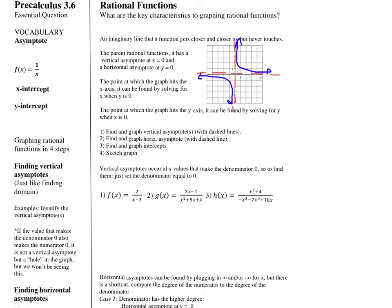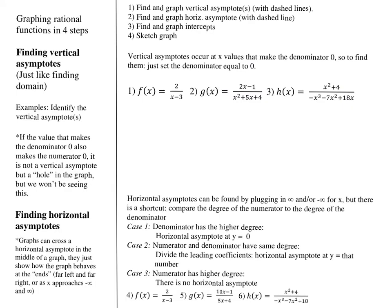Next up: graphing rational functions in four easy steps. We're going to find and graph the vertical asymptotes with dashed lines, horizontal asymptotes, intercepts, and then sketch it. Starting off, vertical asymptotes occur at x values that make the denominator equal to 0. So to find them, set the denominator equal to 0. For number one, x minus 3 equals 0, so x equals 3 is our vertical asymptote.